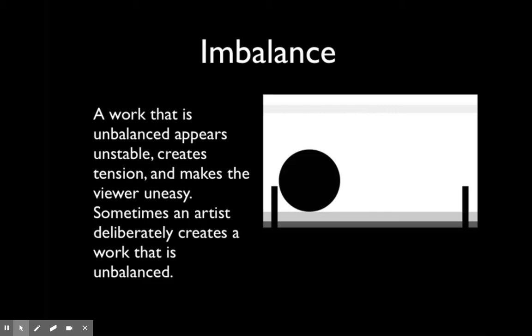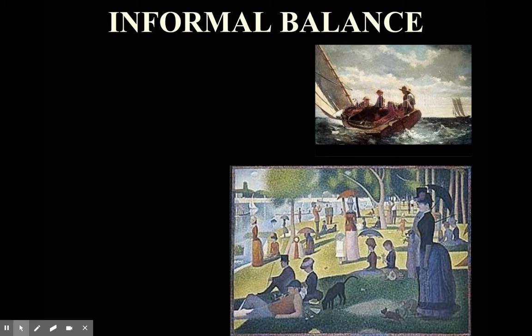There is also a term called imbalance — that's when a work is unbalanced. A work that is unbalanced appears unstable and creates tension, making the viewer uneasy. Sometimes an artist will deliberately create an unbalanced work. Your brain recognizes it without you consciously thinking about it. For example, a big black circle on the left makes the image look like it's leaning to the left, creating that uneasy tension.